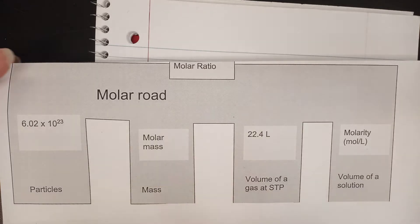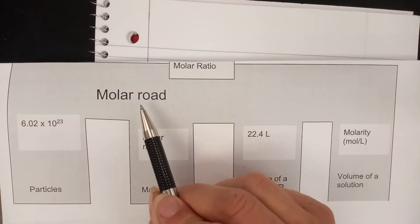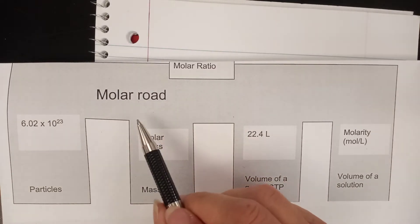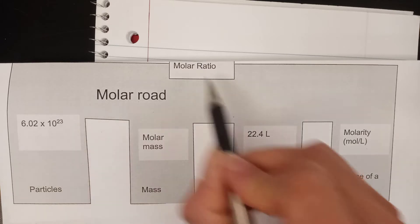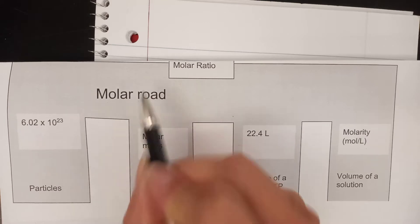The basic rule that holds fast every time is absolutely everything you do goes to or from one mole. Everything we do has to go to or from moles. You cannot ever go from particles to mass in one single step.